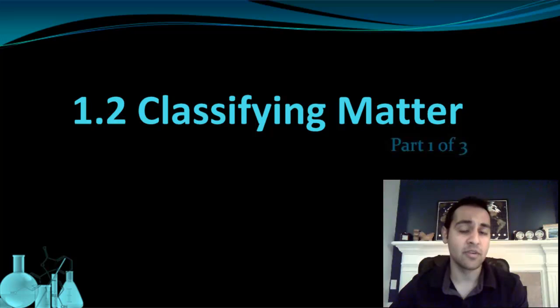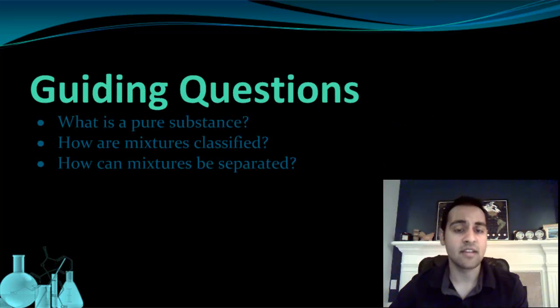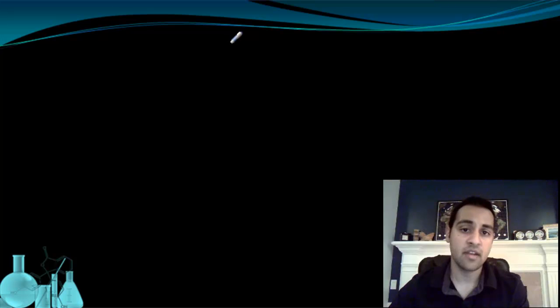Now that's almost too broad for our purposes in chemistry. We want to narrow that down a little bit when we talk about matter. So one of the first things we're going to ask ourselves today is, how can we narrow that down? What we're going to see is that we can categorize or classify matter based on its properties.